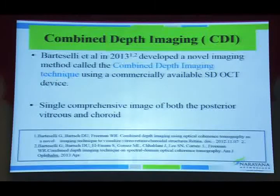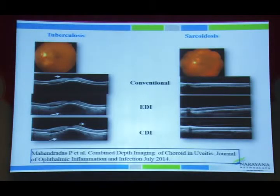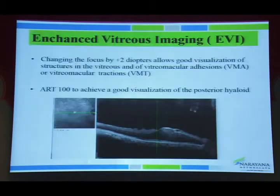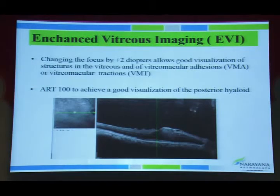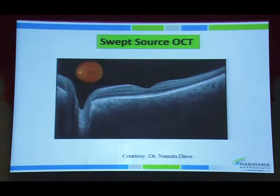The CDI (combined depth imaging) approach combines normal and EDI scans in a single scan to visualize changes from vitreous to choroid, as described by Barteselli et al. — useful for choroidal granulomas in tuberculosis and sarcoidosis. Enhanced vitreous imaging with additional lenses allows visualization of posterior vitreous opacities and epiretinal membrane. The swept-source OCT provides good penetration, and in a VKH case, following intravenous methylprednisolone, disappearance of serous retinal detachment was seen but persistence of increased choroidal thickness remained.